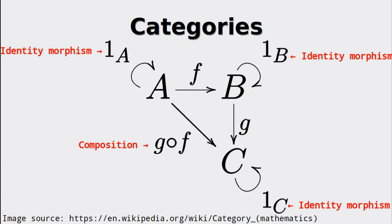In a category, every object has at least one identity morphism and every arrow or morphism is composable. So the composition we see in this example is not optional, but necessary to have a valid category.